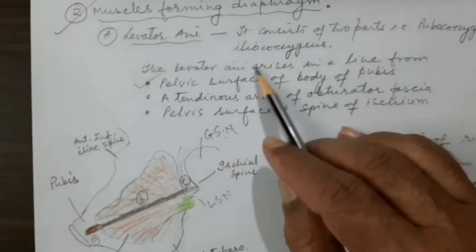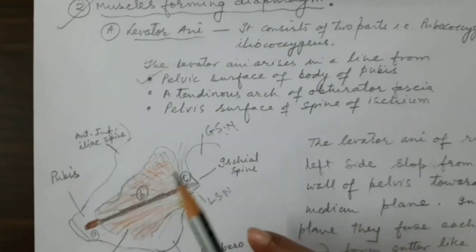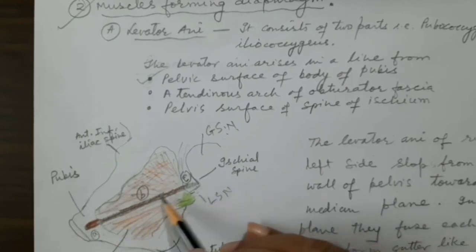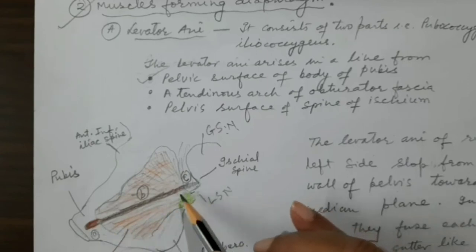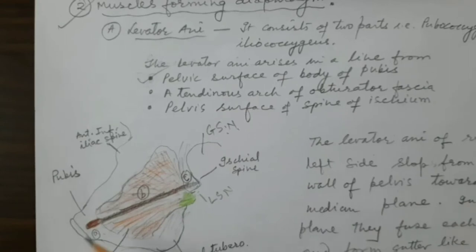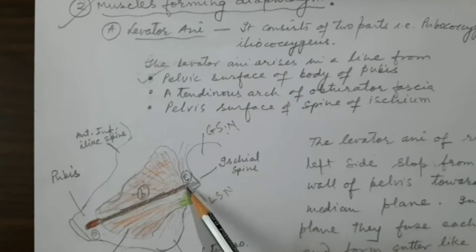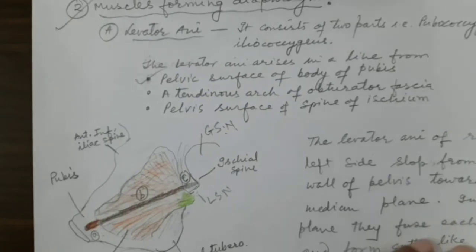These three parts of levator ani are named accordingly: the first part is called pubococcygeus, as fibers run toward the coccyx; the remaining part is called iliococcygeus; and the third posterior part may be called istiococcygeus. The fibers of levator ani can be divided into three parts depending on their origin: pubococcygeus from the pubic bone, iliococcygeus from the tendinous arch, and the part from the ischial spine.